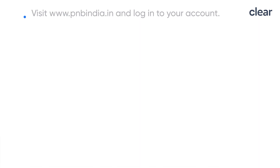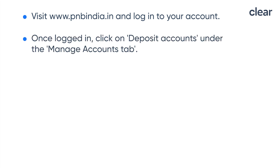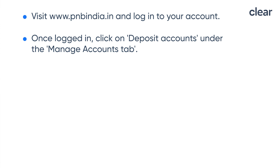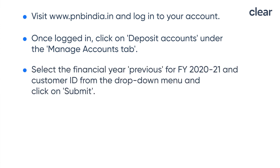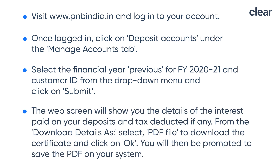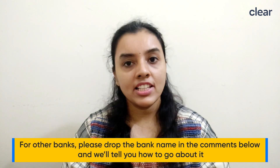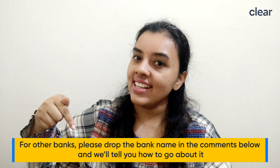Let us now see how to download the Punjab National Bank interest certificate. Visit www.pnbindia.in and login to your account. Once logged in, click on deposit accounts under the manage accounts tab. Select the financial year — previous for FY 2020-21 — and customer ID from the drop-down menu, then click on submit. The web screen will show you details of the interest paid on your deposit and tax deducted. Select PDF file to download the certificate and click on OK. For any other banks, please drop the bank name in the comments below and we will tell you how to go about it.